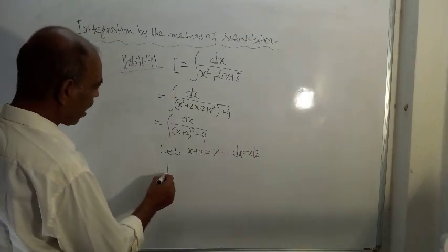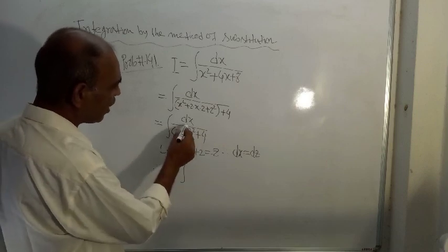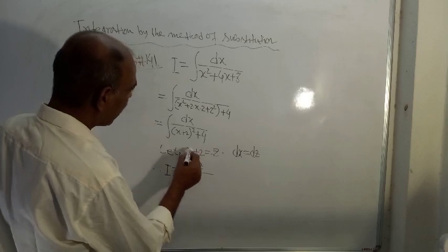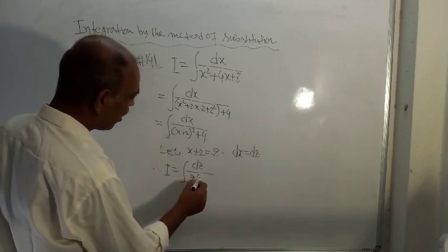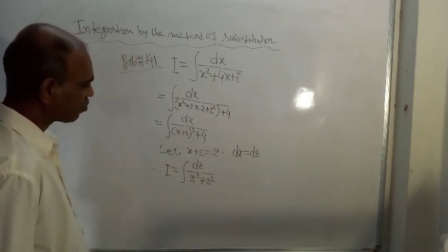Therefore integration I, this is equal to what? This is equal to dx which is dz and then x plus 2 which is z. So z square and here 4 is there which is equal to 2 square.